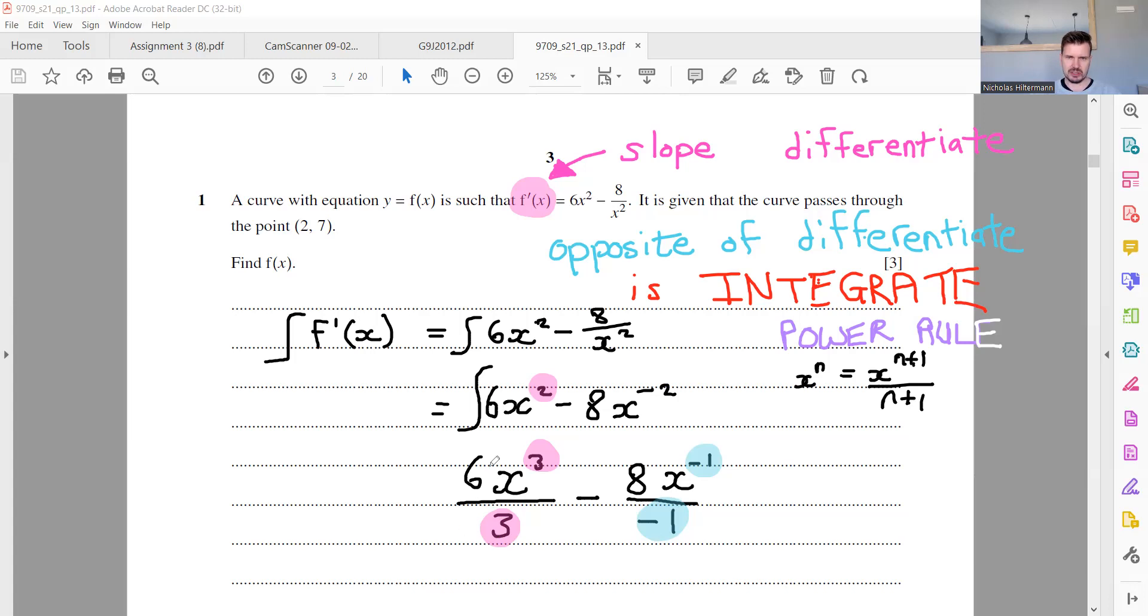And I'm almost done. 6 divided by 3 is 2. Okay, 2x cubed plus, because a minus and a minus is a plus. So this here makes a plus. So just be careful of that. Plus 8x to the minus 1. Now, I can leave it like that. Or I could make it 8 over x.